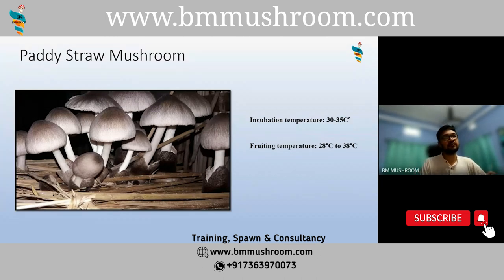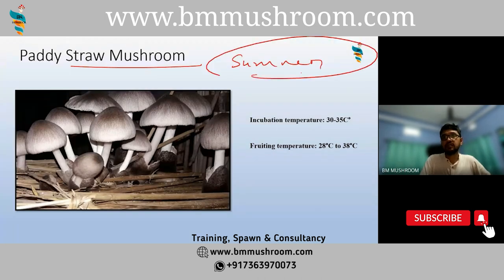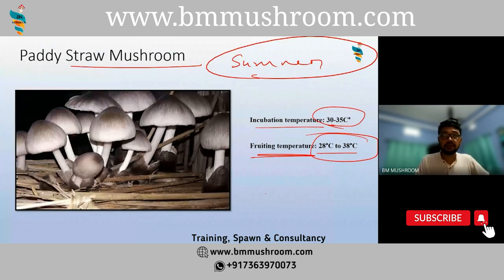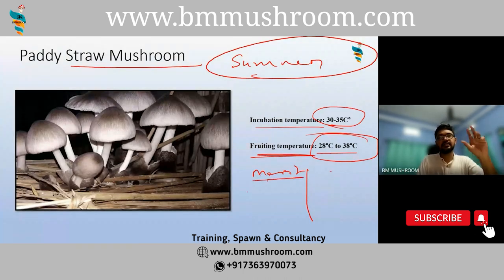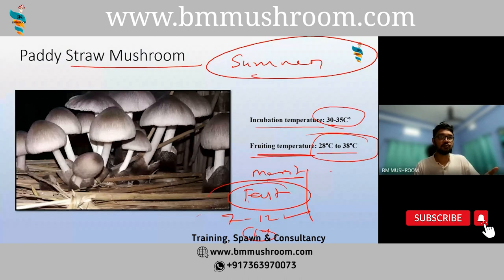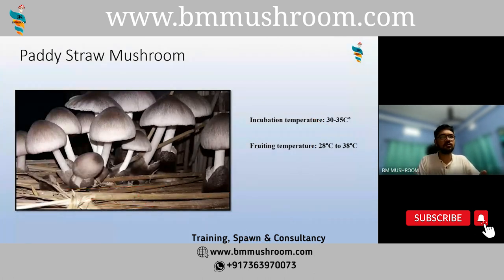The paddy straw mushroom — Volvariella volvacea — also called the straw mushroom — is again a summer mushroom. If you have a low-cost, not very high-tech farm setup, this is the mushroom you can try. The fruiting temperature range is 28 to 30 degrees Celsius, and the incubation temperature is around 30 to 35 degrees Celsius. The merit of this mushroom is that it is a very fast, super fast growing species — just like pink oyster mushroom, it can be grown within 7 to 12 days, and at maximum 14 days.